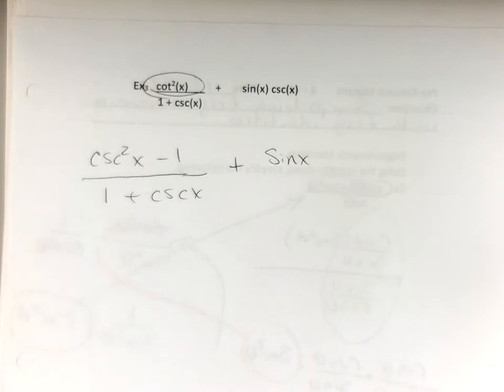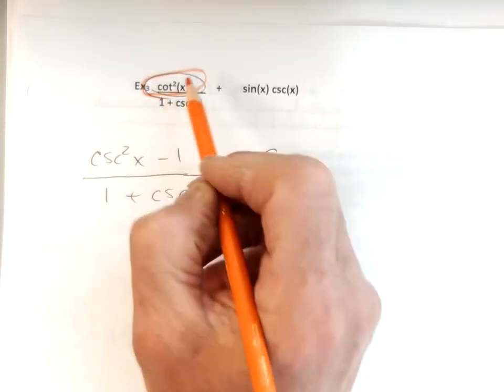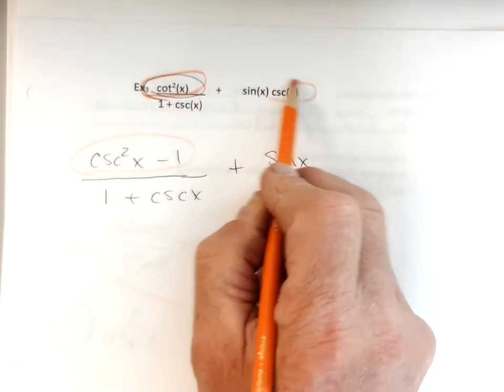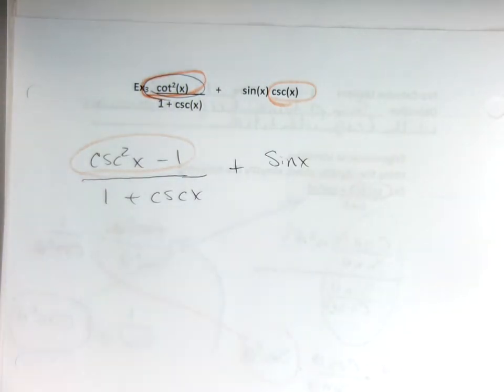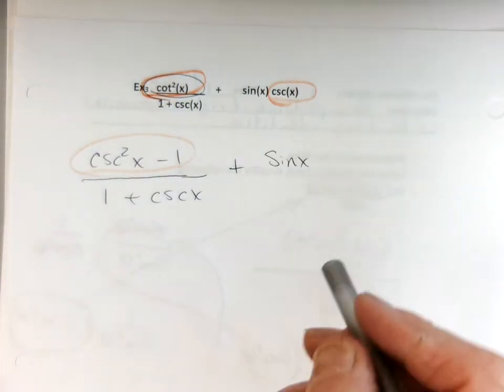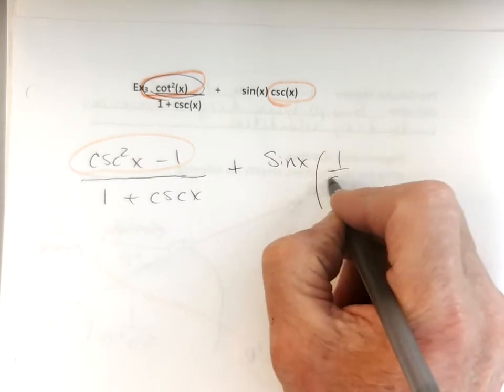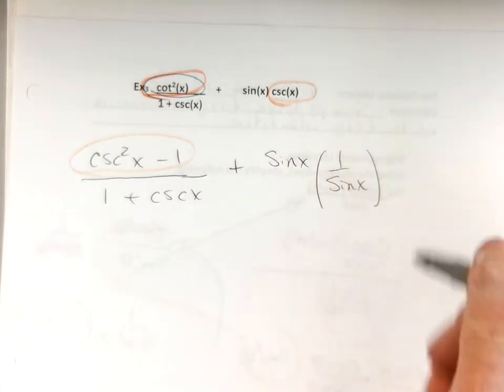And then, help me out, help me out, help me out, what am I going to do with a cosecant? One over sine. One over sine, right? Oh, I like that. Don't you, Lauren? Mm-hmm. Oh, that's really nice.